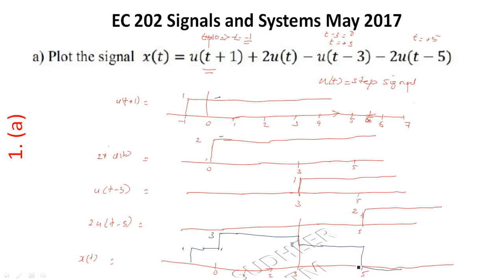So the resulting signal x(t) is: from t = -1 to 0, magnitude is 1; from 1 to 3, magnitude is 3; from 3 to 5, magnitude is 2; from 5 to infinity, magnitude becomes 2 - 2 = 0. This is the final signal plot.